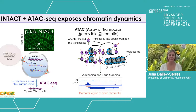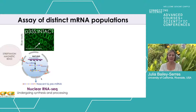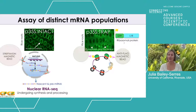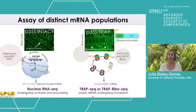This method takes advantage of a commercially available Tn5 transposase, and with isolated nuclei it's possible to resolve regions of open chromatin following ATAC sequencing. This illustrates a region of accessibility 5' of a protein-coding region compared to a control of naked genomic DNA. INTACT also allows us to capture nuclear RNAs, and we couple this with TRAP technology, which isolates ribosomes based on an epitope-tagged ribosomal protein L18. With TRAP, we can look at mRNAs undergoing translation and also the positions of individual ribosomes on RNA using ribosome footprinting.